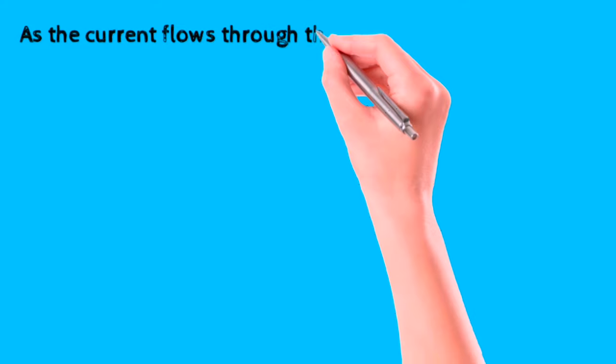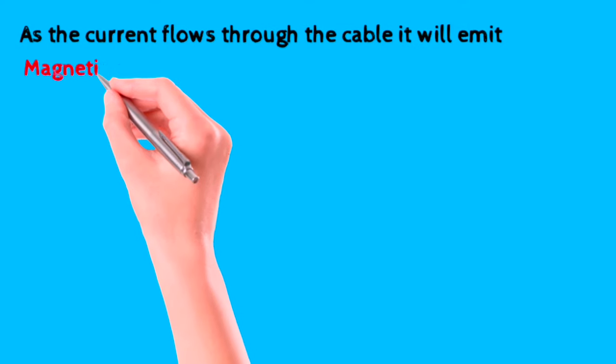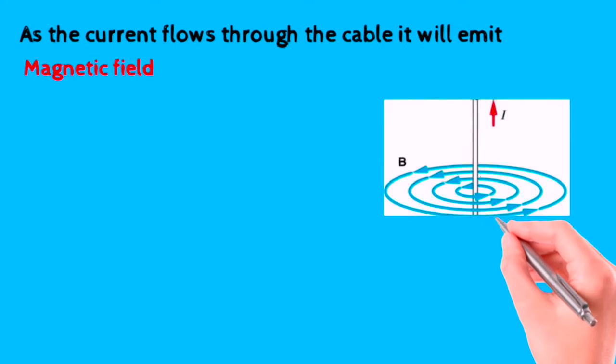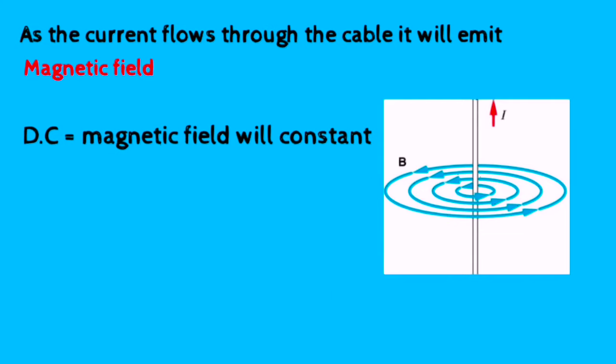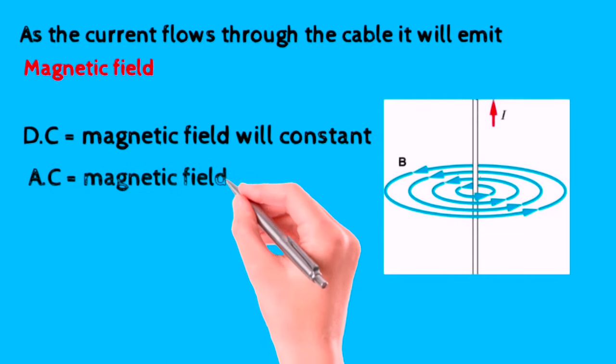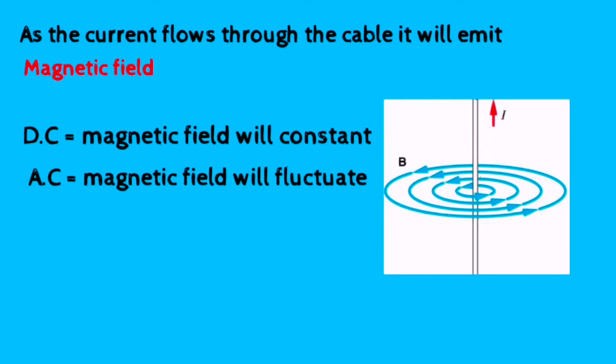As current flows through the cable, it will emit a magnetic field around it. If we pass direct current through the cable, then the magnetic field will remain constant. But if we pass alternating current through the cable, then the magnetic field will increase and decrease its strength as the current changes its polarity.